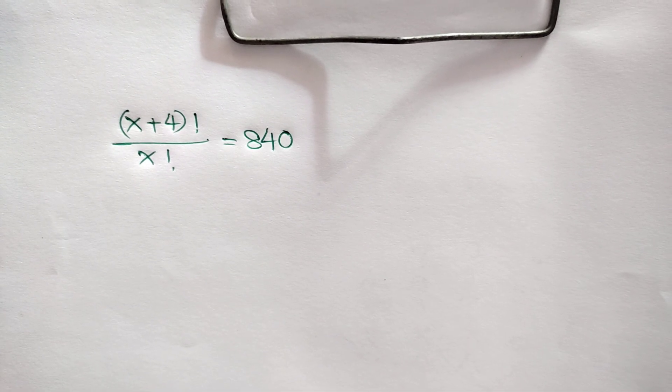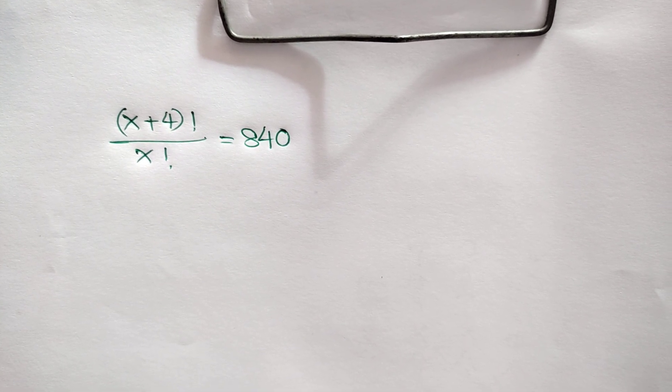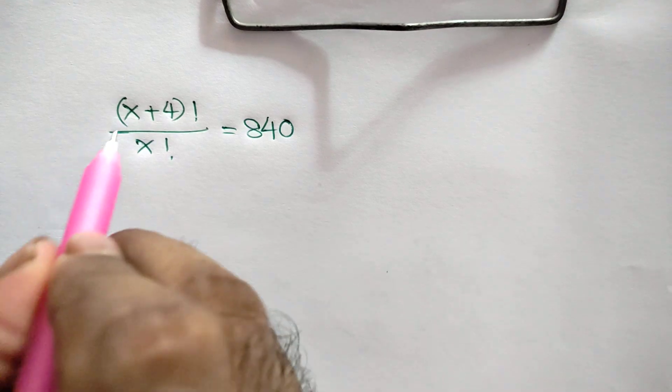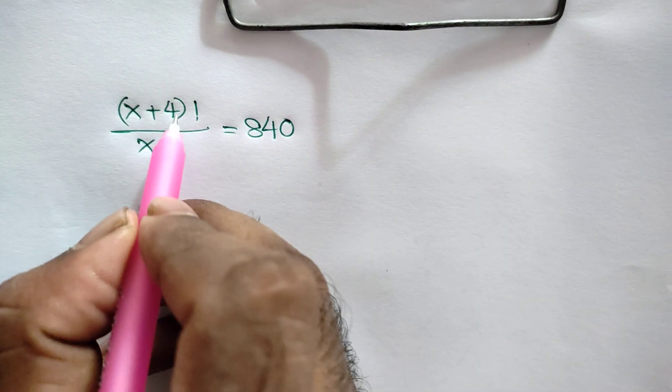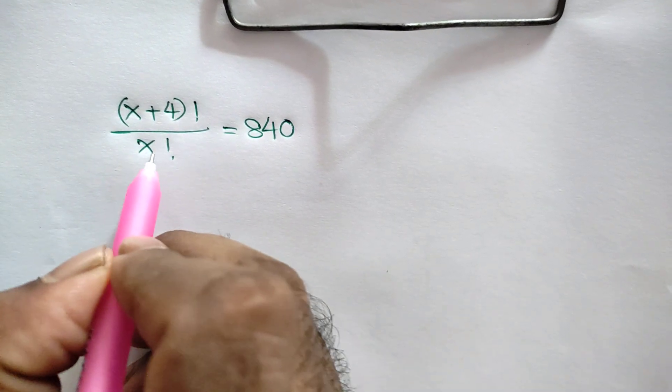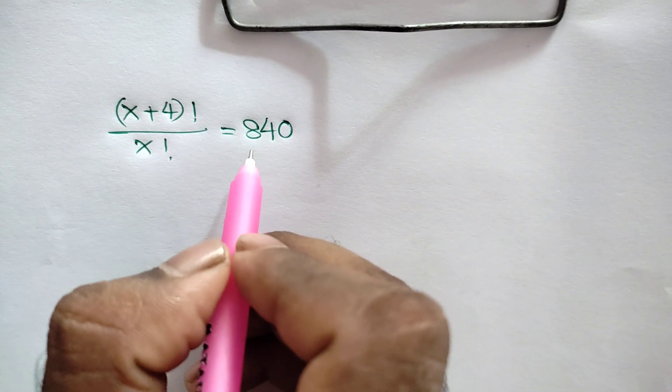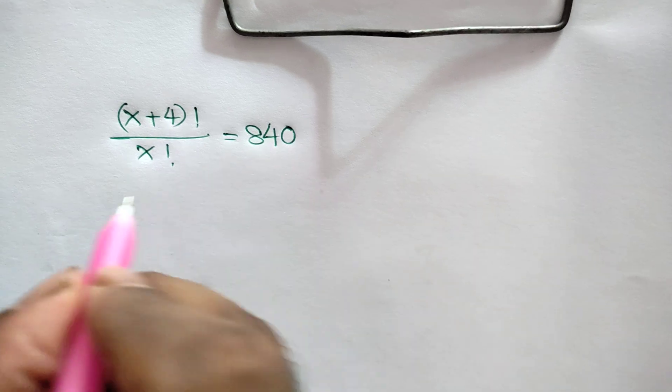Hi everyone. In this video I am going to show how to solve this factorial problem where (x+4)! over x! is equal to 840.